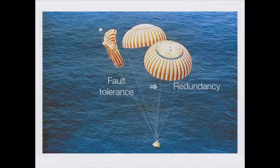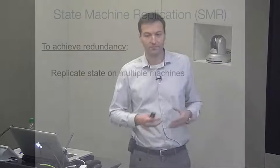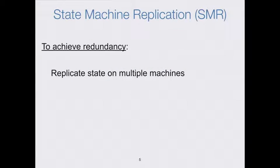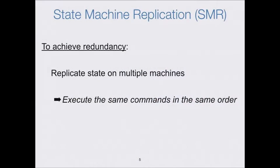Like fault tolerance in any other domain, this is mostly about redundancy. The way we achieve redundancy in distributed systems is through state replication. We have a process that's replicated on multiple machines, so even if some of these machines fail, the remaining ones will be able to handle client queries and commands just as the failed ones would have. To keep the states of these processes in sync, we implement them as state machines.